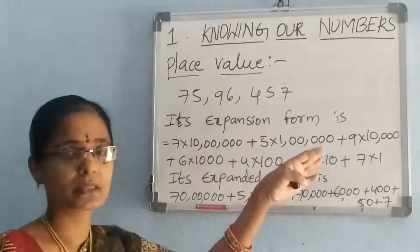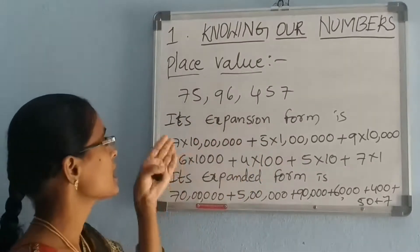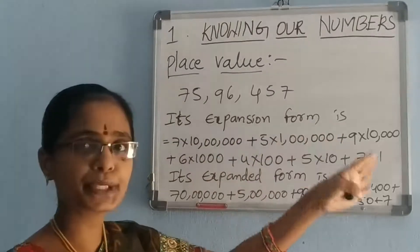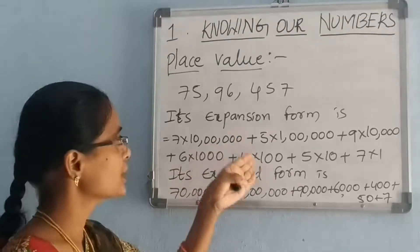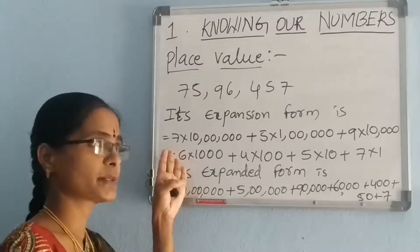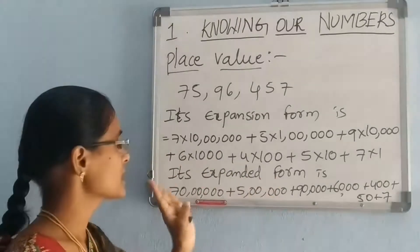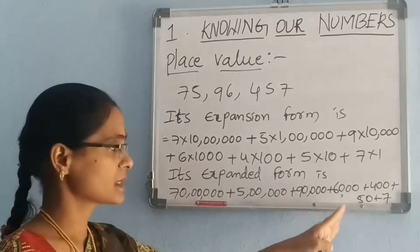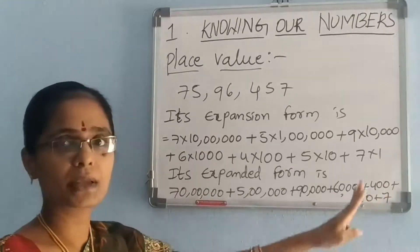Its expansion form is: 7 × 10 lakhs + 5 × 1 lakh + 9 × 10,000 + 6 × 1,000 + 4 × 100 + 5 × 10 + 7 × 1. Its expanded form is: 70 lakhs + 5 lakhs + 90,000 + 6,000 + 400 + 50 + 7.